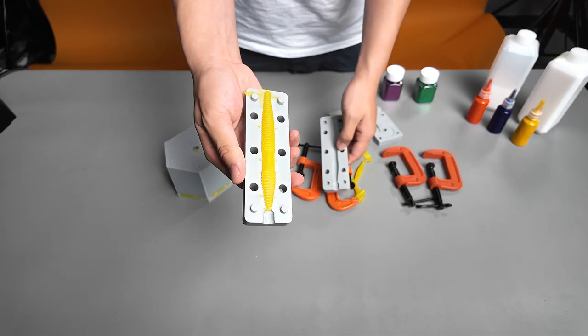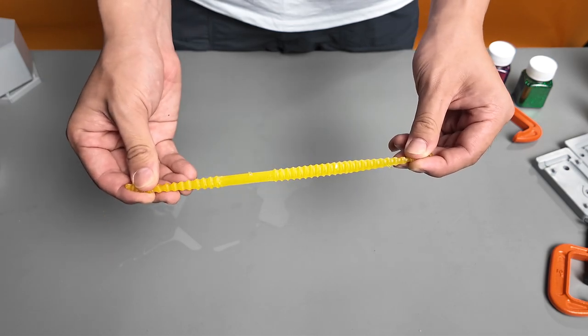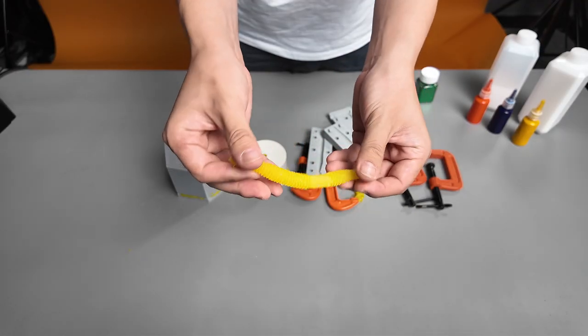Thanks to its flexibility, the Zero-A formula stretches up to twice its length without breaking, making it ideal for products requiring high elasticity.